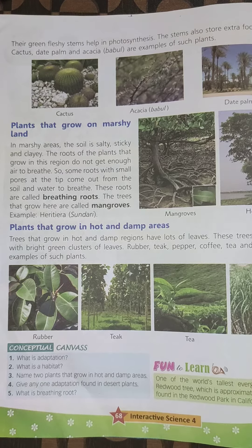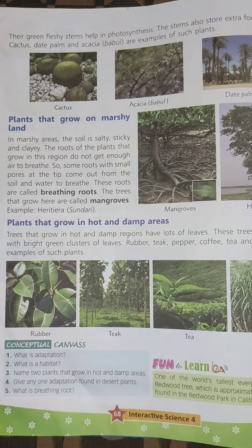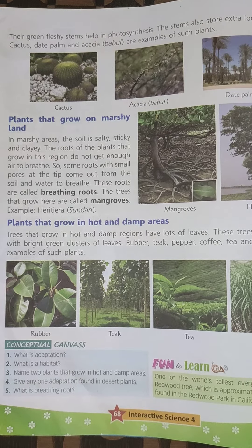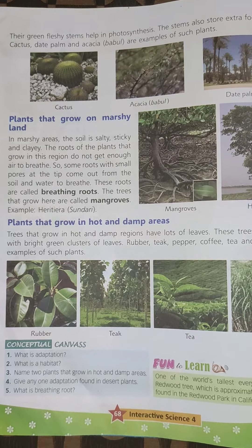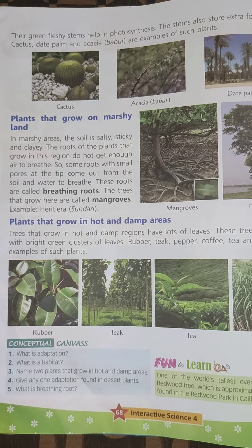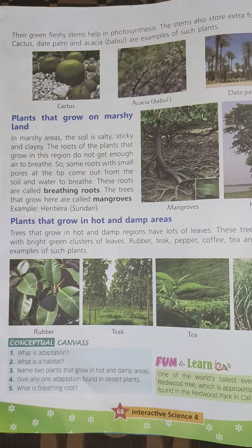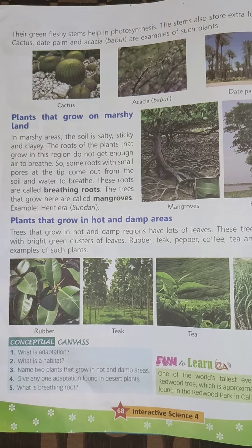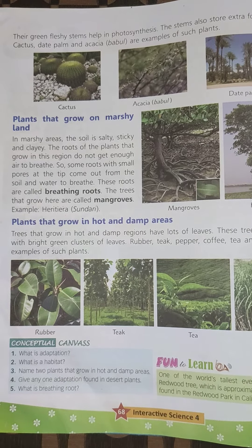So some roots with small pores at the tip come out from the soil and water to breathe. These roots are called breathing roots. The trees that grow here are called mangroves. Example: Heritiera, which means Sundari.